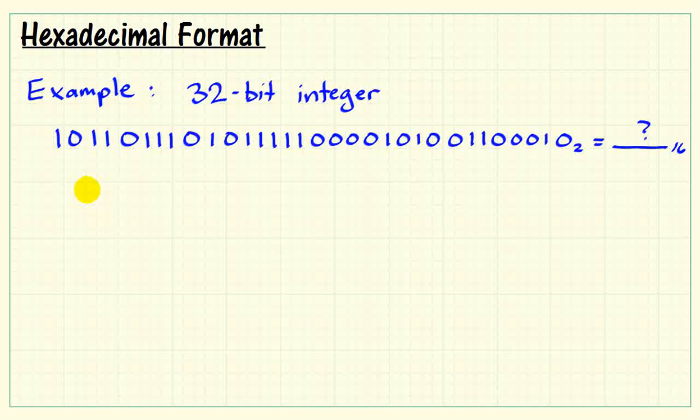Let's scoot this up a bit so we have a little bit more working area. Now, here's what we do. First, let's write out all possible 4-bit patterns. We would have a total of 2 to the 4th, or 16 possible patterns.